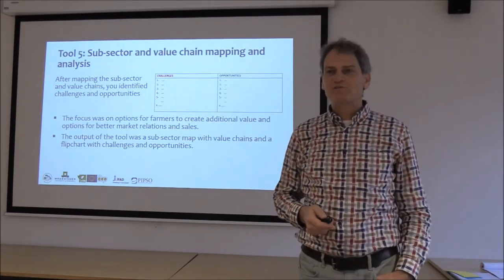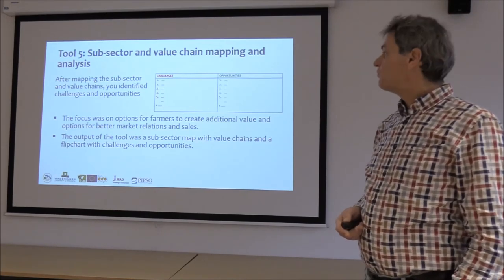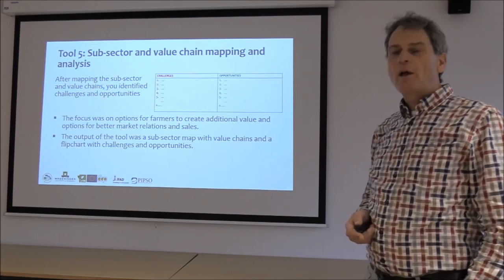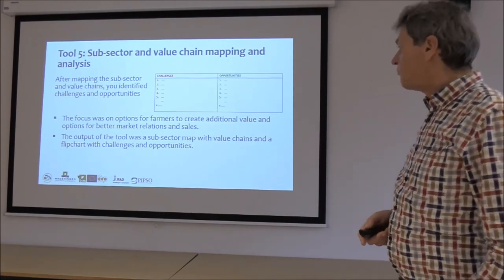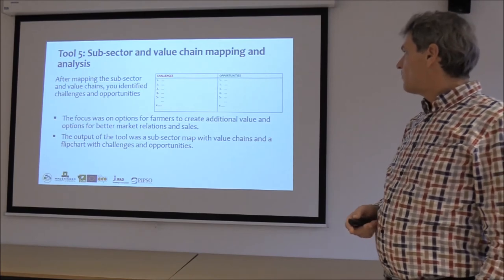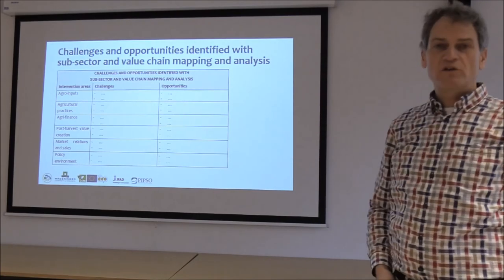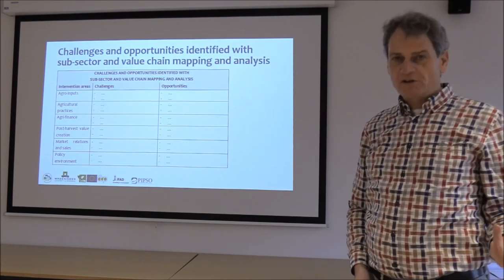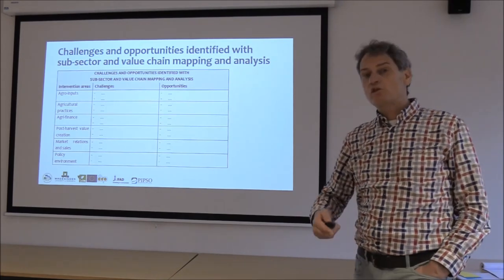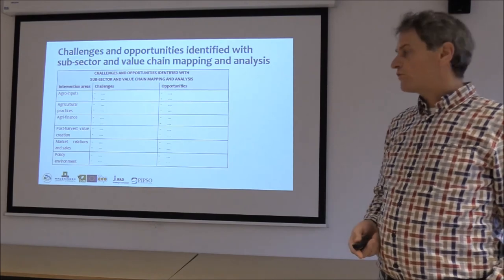The fifth tool is the subsector and value chain mapping and analysis. You made the subsector map and identified many challenges and opportunities — most probably related to market relations and value creation, which are the fourth and fifth intervention areas. But here again you can classify all challenges and opportunities according to the six intervention areas. Every different tool gives you different challenges and opportunities, and sometimes the same ones appear across tools, which is a cross-check of their importance.